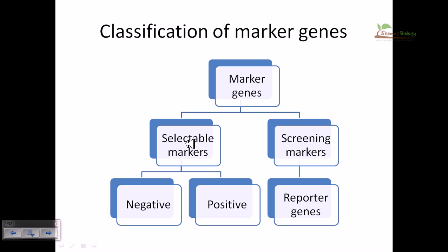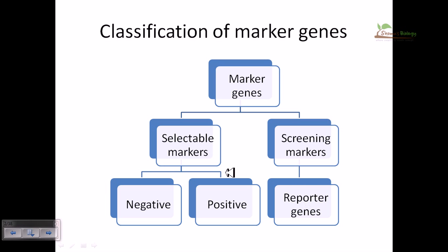Marker genes can be divided into two parts: one is selectable markers, and the other is screening markers. The type I just described is called the screening marker, also called reporter genes — they report the presence of a particular desired sequence inside the genome. The other type is called selectable markers, which help us to identify or select our desired host organism or desired product.